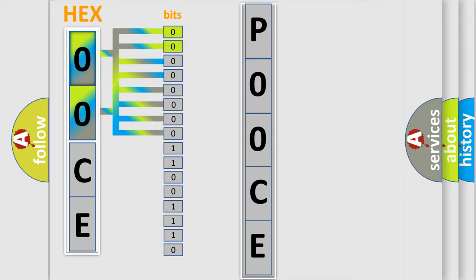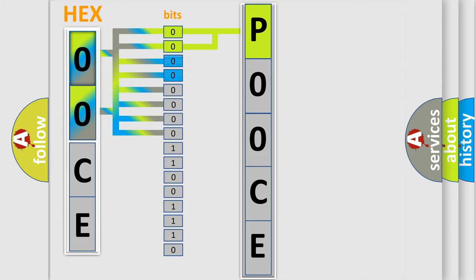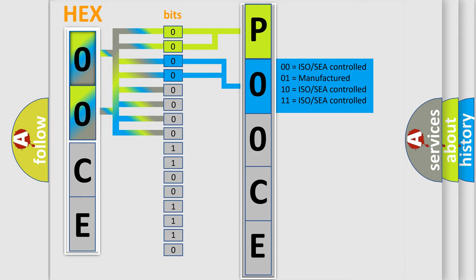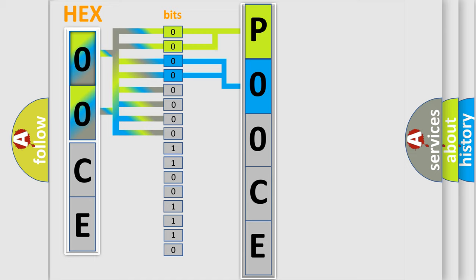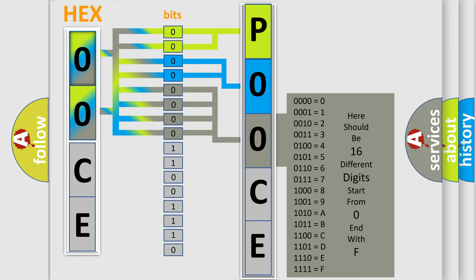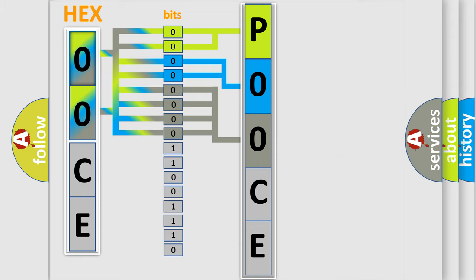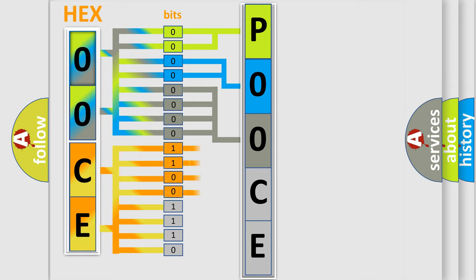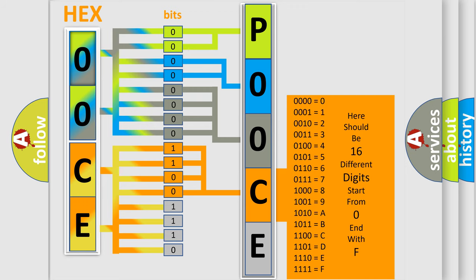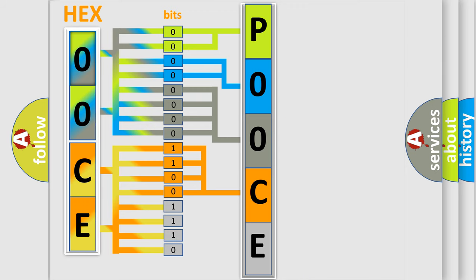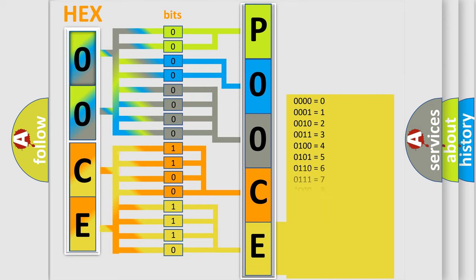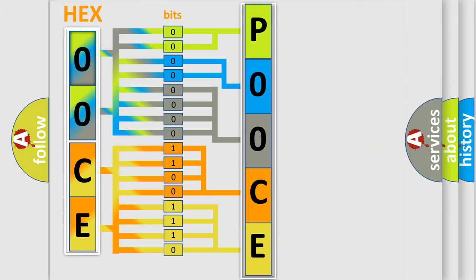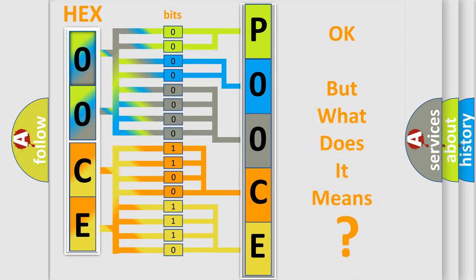By combining the first two bits, the basic character of the error code is expressed. The next two bits determine the second character. The last four bits of the first byte define the third character of the code. The second byte is composed of eight bits: the first four bits determine the fourth character, and the last four bits define the fifth character. A single byte conceals 256 possible combinations. We now know in what way the diagnostic tool translates the received information into a more comprehensible format.